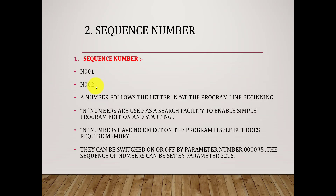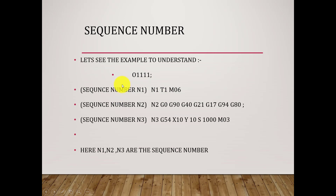The second term is sequence number. A sequence number is a number that follows the letter N at the beginning of a program line. For example, if we write a program, every line has a sequence number to identify where we have to put the values — N1, N2, N3. These are the sequence numbers.